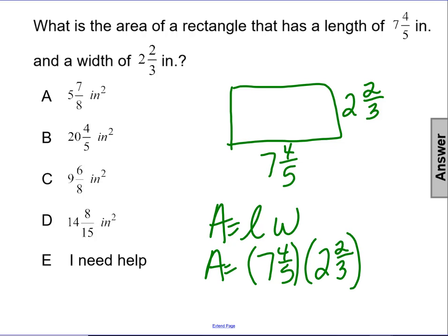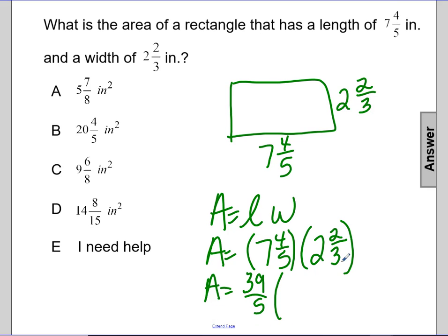In order to solve this, I would go ahead and convert these to improper fractions. Seven times five is thirty-five plus four, thirty-nine over five, times two times three is six, plus two is eight, eight-thirds.